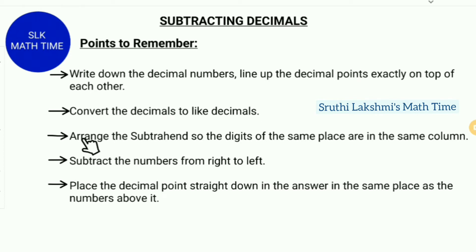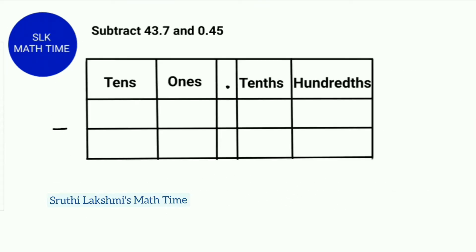Then we arrange the subtrahend so the digits of the same place are in the same column. Then we subtract the numbers from right to left as we would when we subtract normally. Finally, we place the decimal points straight down in the answer line. Now let's see an example.